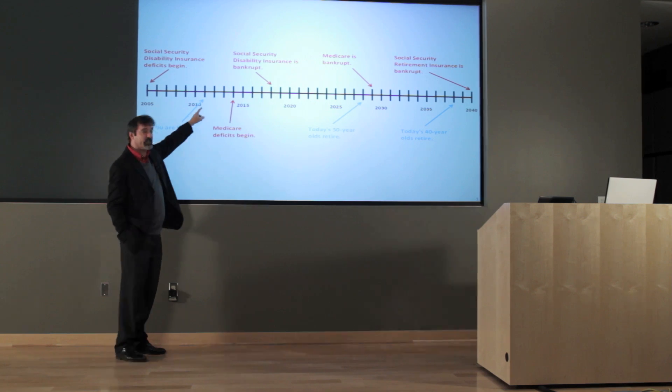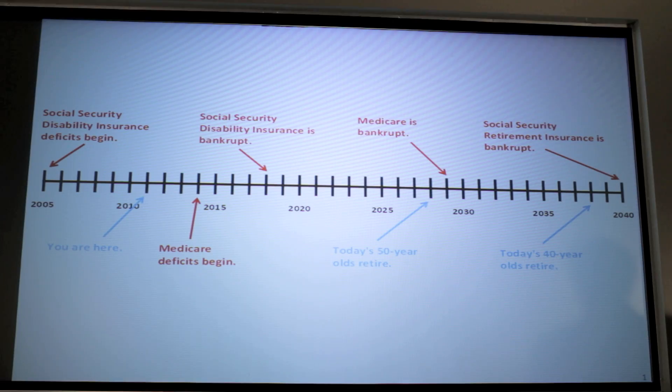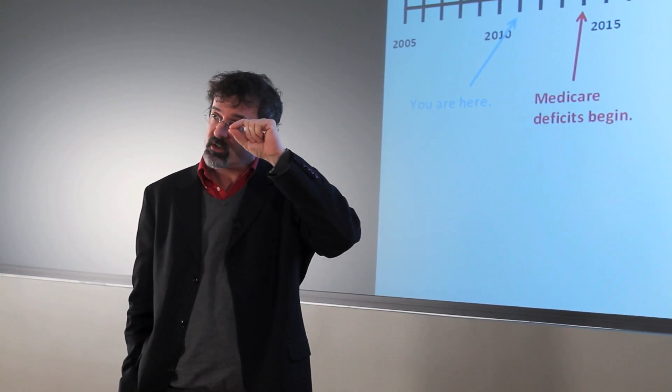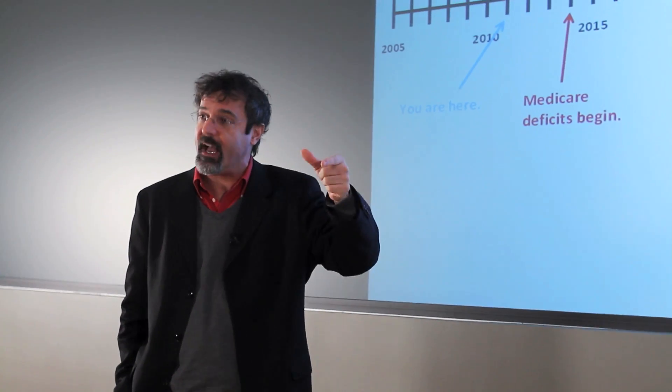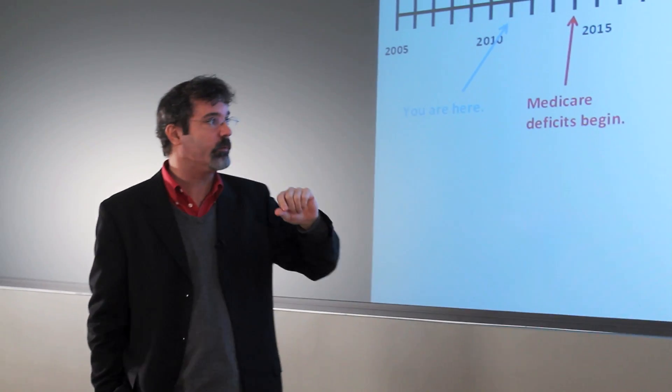You are here at 2011. Social Security disability deficits began back here in 2005. What that means is that the money that Social Security disability insurance brought in each year starts to be less than the amount of money they pay out. So they're in a deficit situation.